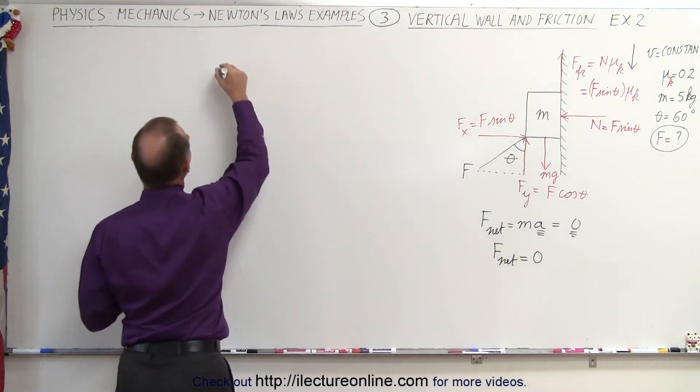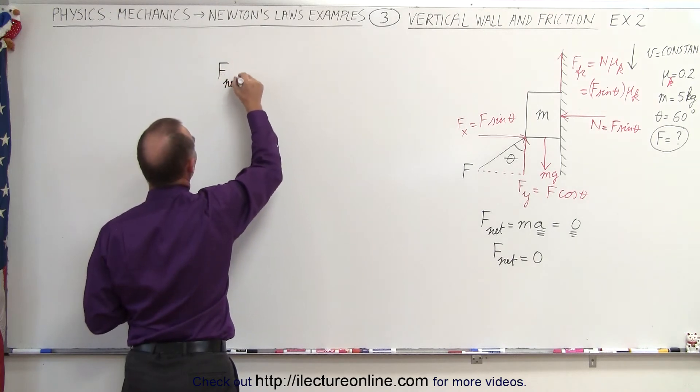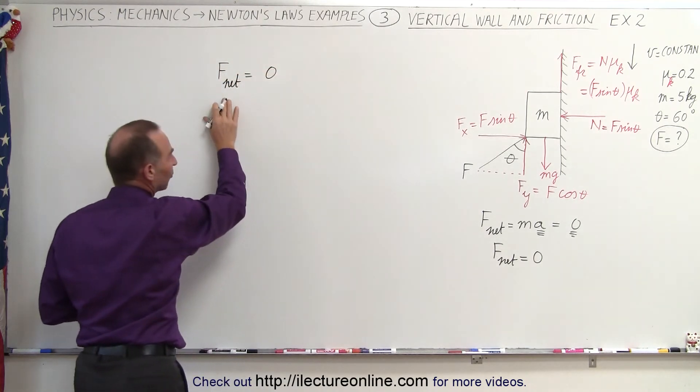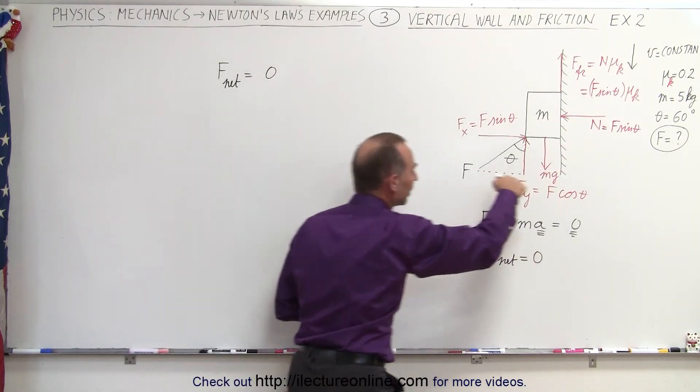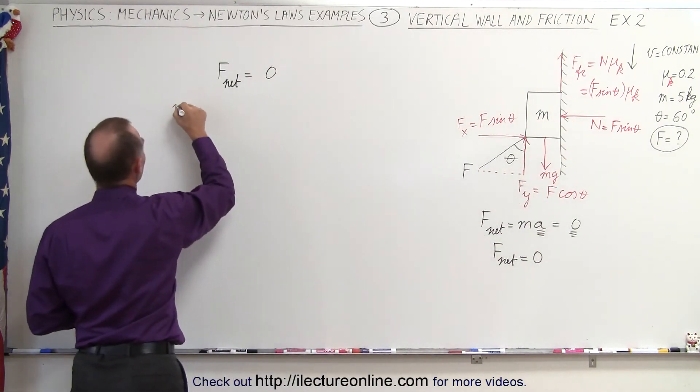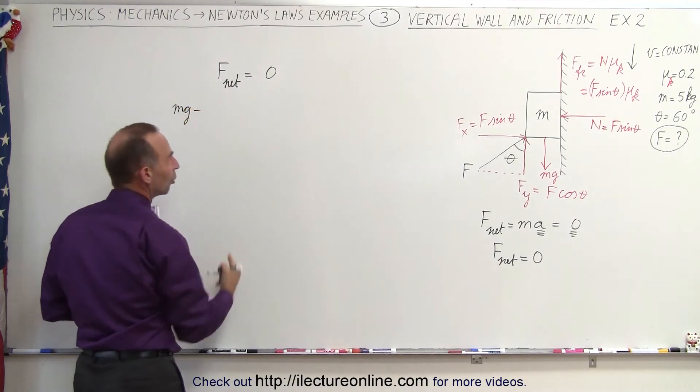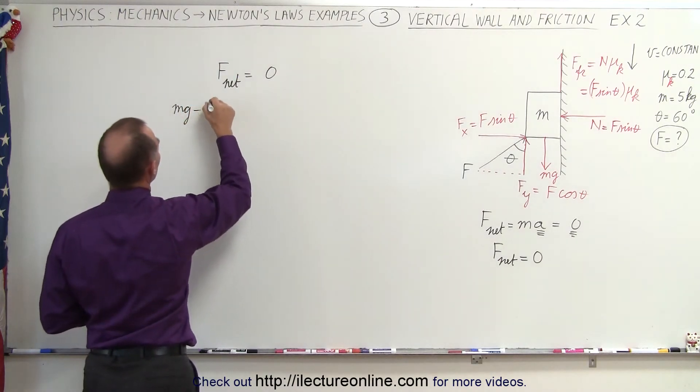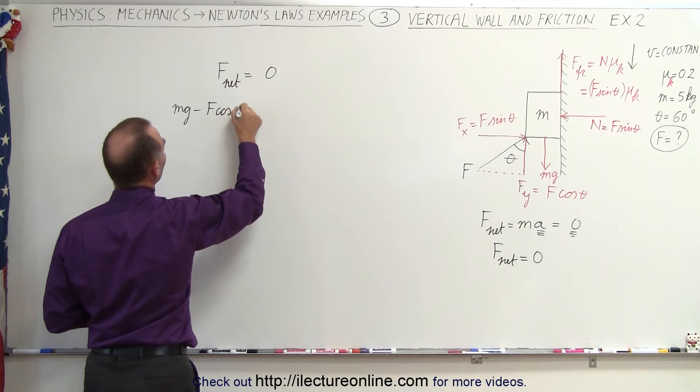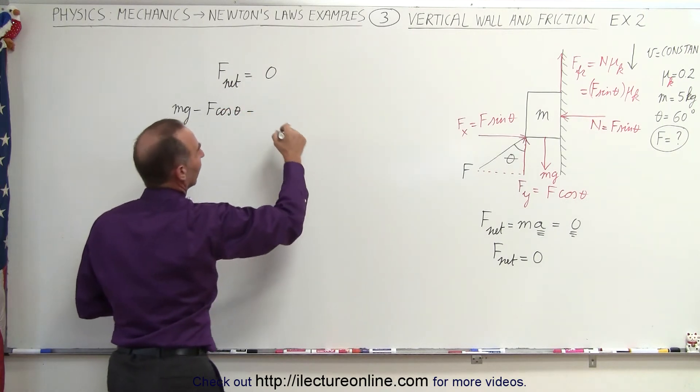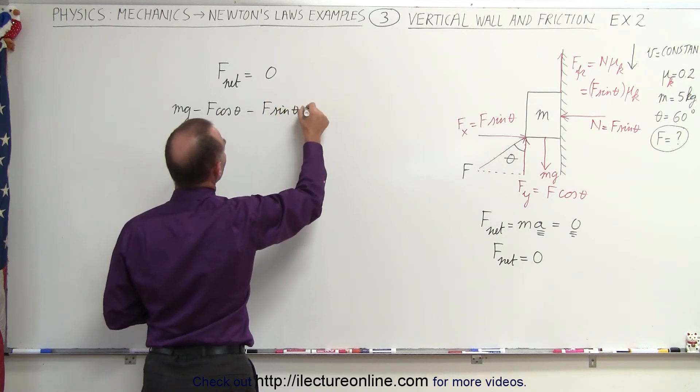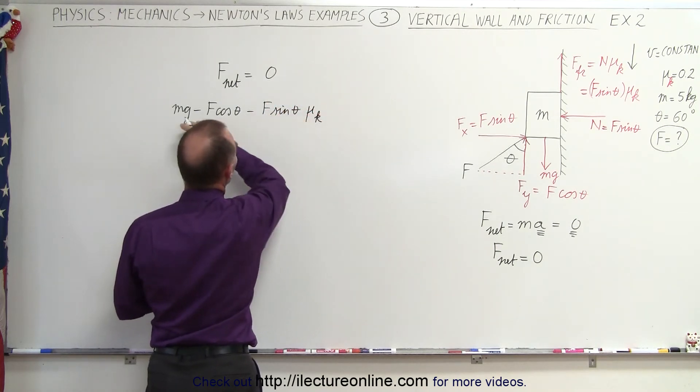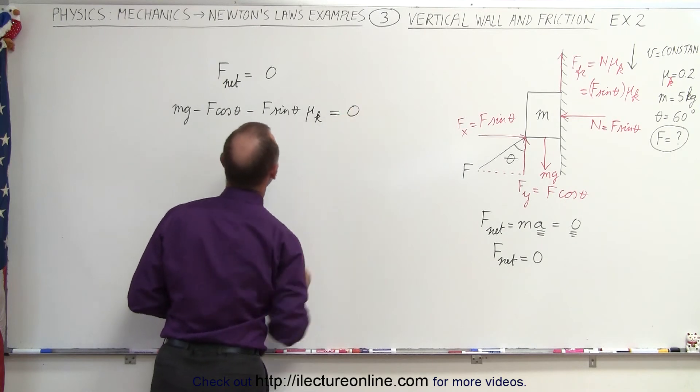So now we can write f net is equal to zero, and so the net force will be all the forces aiding the motion, which mg would be aiding the motion. That would be mg minus all the forces opposing the motion, which is f times the cosine of theta, and the friction force, which is f times the sine of theta times mu sub k. And all the forces added together must add up to zero.